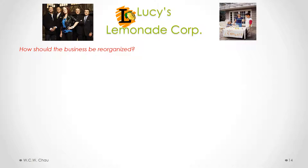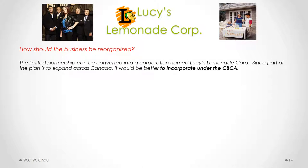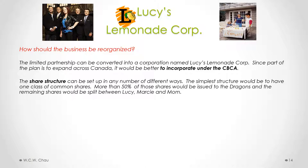How should the business be reorganized? The first step is to convert the limited partnership into a corporation named Lucy's Lemonade Corp. Given that part of the plan is to expand across Canada, it would make better sense to incorporate under the CBCA instead of the OBCA — if done under the OBCA, we would need the extra step of obtaining extra-provincial licenses in each province outside of Ontario. So we'll incorporate a CBCA corporation. Next, we need to decide on the appropriate share structure — the simplest structure would be one class of common shares.